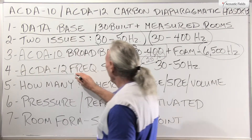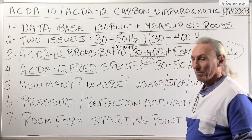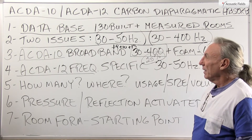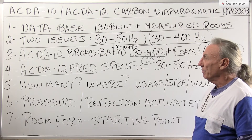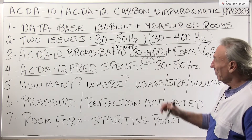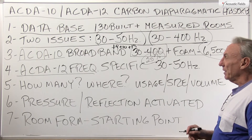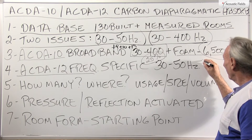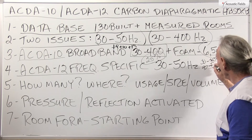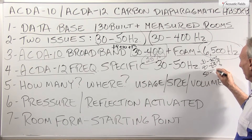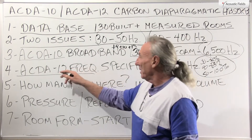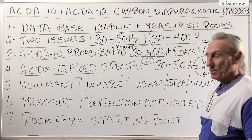We really went after that problematic range from 30 to 50 hertz — a really powerful, boomy range especially for home theater. We came up with the technology using our carbon to really address this issue. Looking at the absorption coefficients: at 30 cycles we're about 35%, at 40 we're 63%, and at 50 we're 100%. So you have a really powerful sponge with the ACDA12 to go after that 30 to 50 cycle range.